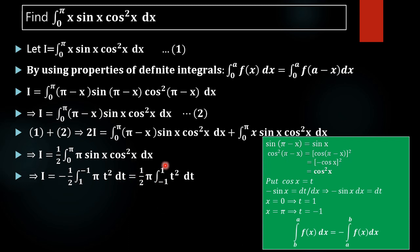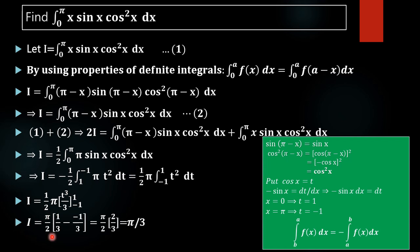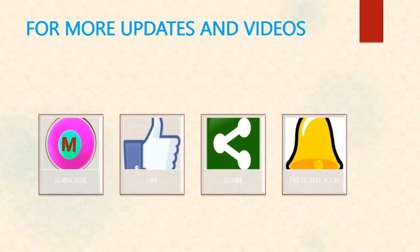Evaluating (π/2)·[t³/3] from −1 to 1: we get (π/2)·(1/3 − (−1/3)) = (π/2)·(1/3 + 1/3) = (π/2)·(2/3). Cancelling the 2s, we get the final answer π/3. So the required value of the integral ∫₀^π x·sin(x)·cos²(x) dx is π/3.